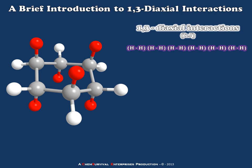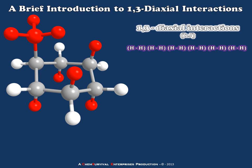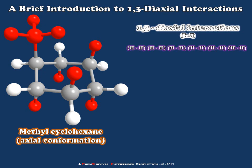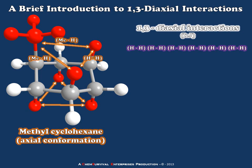Now that we have an inventory of all the diaxial interactions in our equatorial conformer of methylcyclohexane, let's place that methyl group in an axial position and see what effect it will have. Here we have methylcyclohexane in the axial conformation. We still have three potential 1,3-diaxial interactions on the top of the molecule and three on the bottom. Except that now we have methyl-hydrogen diaxial interactions that are possible. At the top of the molecule, instead of three H-H interactions, I now have only one H-H and two methyl-hydrogen diaxial interactions. On the other side, not much has changed — it's the same as before.